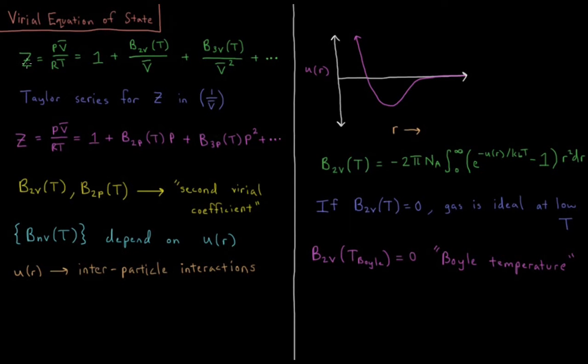So from our previous video, we have Z, our compressibility factor, defined as the pressure times the molar volume over the gas constant times the temperature of a gas, PV bar over RT. For an ideal gas this is equal to 1, but for non-ideal gases this could be anywhere between zero and infinity.